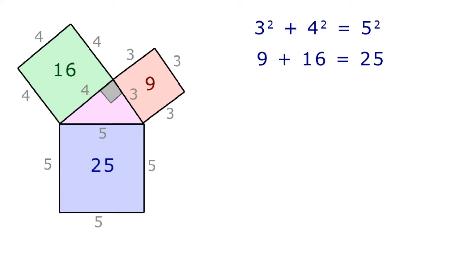So if we have a right angle triangle with sides A, B and hypotenuse C, we can write a general equation. A squared plus B squared equals C squared.